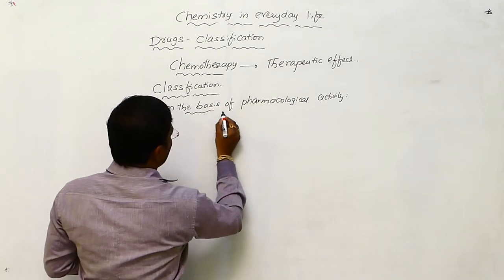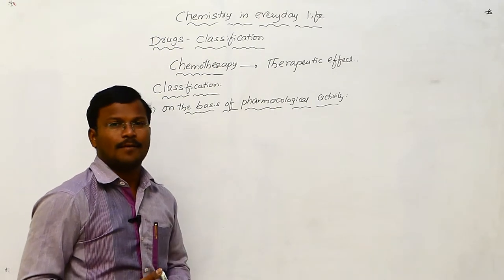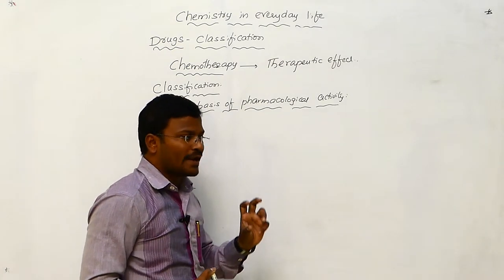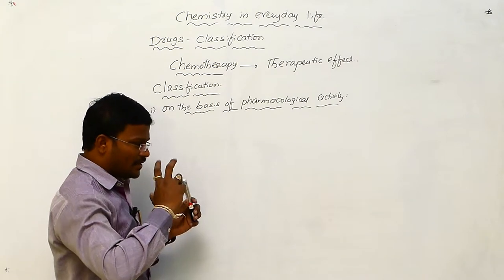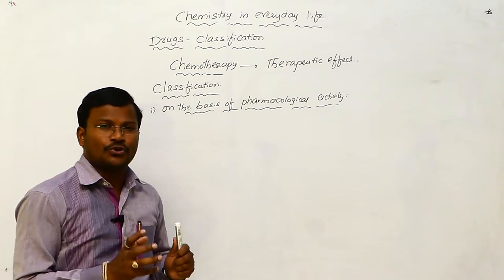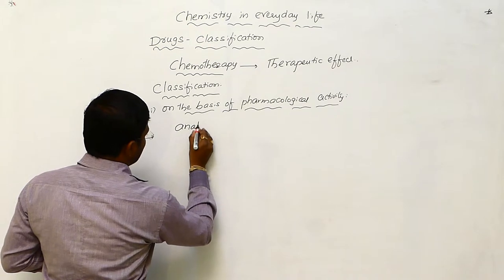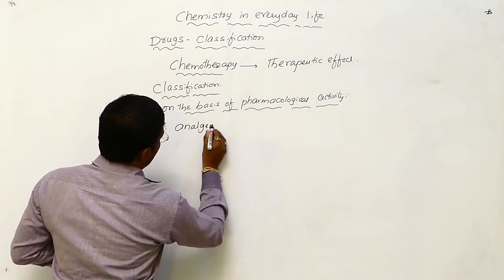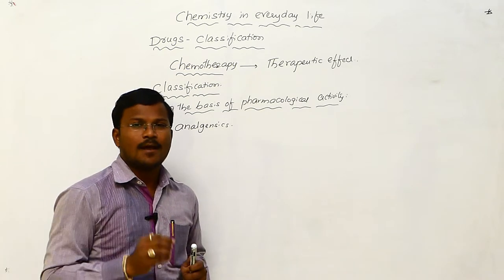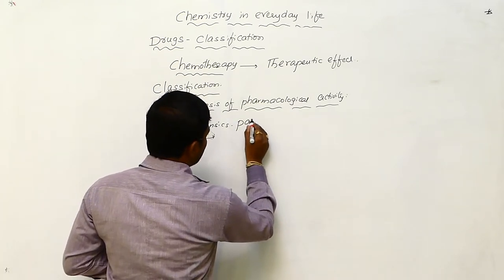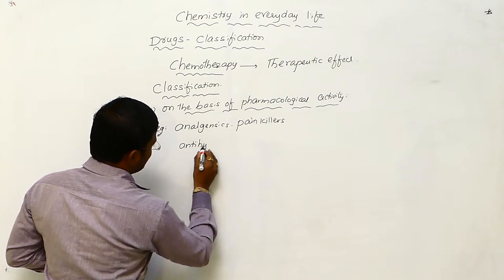This classification depends upon pharmacological activity and is very helpful for doctors because it gives all the range of medicines available for a particular disease or aspect. Based on this we can easily identify which drugs are available to cure desired diseases. For example, analgesics — all drugs belonging to the analgesic class show one character: they are used as painkillers.